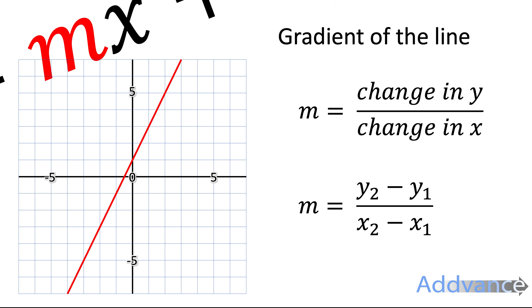Now, when you're trying to find out the gradient of a line, there are two methods we can use. We can use the top equation here, which is change in y divided by the change in x.